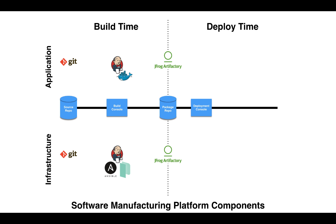The fourth component is the deployment console. The deployment console is the single source of truth in terms of the environment where you deploy your application. Whereas the build console invalidates the argument of 'it builds on my machine,' the deployment console invalidates the argument of 'it deploys from my machine.' This component puts everyone on the same page if a deployment fails. When problems arise, it could be that the problem is with the environment itself; regardless, the team will be on the same page, ready to decisively take action. For our organization, we're using Rundeck, but we're also beginning to explore other implementations.